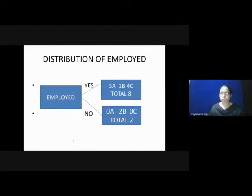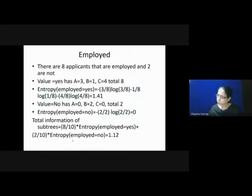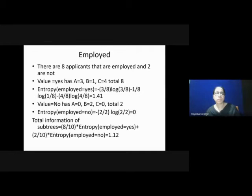When you consider the distribution of attribute Employed, the two values are Yes or No. For Employed-Yes, there are 8 records: 3 in class A, 1 in class B and 4 in class C. For Employed-No, there are 2 records: 0 in class A, 2 in class B and 0 in class C. Entropy of Employed-Yes = minus 3/8 log₂(3/8) minus 1/8 log₂(1/8) minus 4/8 log₂(4/8) = 1.41. Entropy of Employed-No = minus 2/2 log₂(2/2) = 0. Total information = 8/10 × 1.41 + 2/10 × 0 = 1.12.